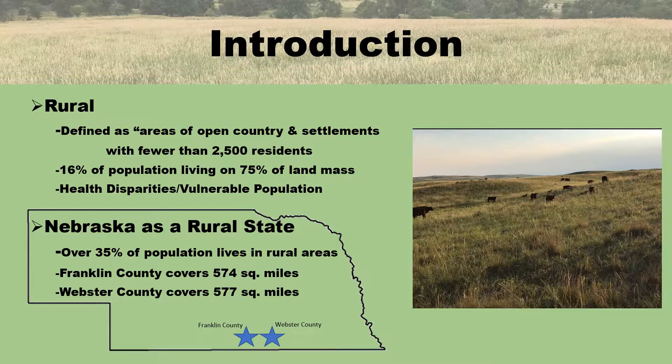The U.S. Department of Agriculture defines rural as areas of open country and settlements with fewer than 2,500 residents. The number of people living in rural areas is only 16% of the U.S. population; however, they reside on 75% of the total landmass. Nebraska is considered a rural state with over 35% of the population residing in areas with less than 2,500 residents.